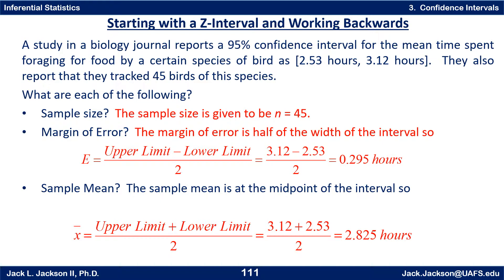The sample mean is halfway in between, which is upper limit plus lower limit divided by 2: 3.12 plus 2.53 divided by 2 — add first, then divide — that's 2.825, which is exactly halfway in the middle. And of course 2.825 minus 0.295 gives 2.53, the mean minus the margin of error for the lower bound, and 2.825 plus 0.295 gives 3.12 for the upper bound.